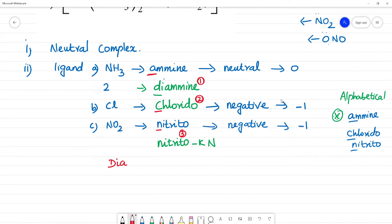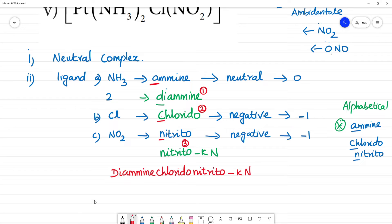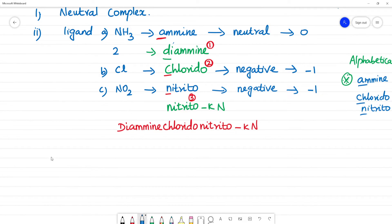The names are: diamine first, chlorido, nitrito. Linkage is with nitrogen. This is the name of the ligand. In the complex, the central metal atom is Pt. Central metal atom is Pt. So Pt is in neutral complex. In a neutral complex, we name it as such. The name is platinum.